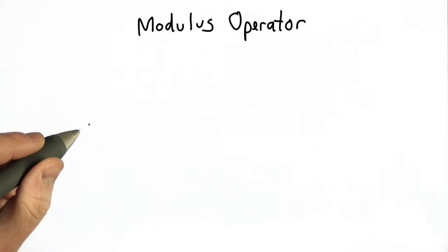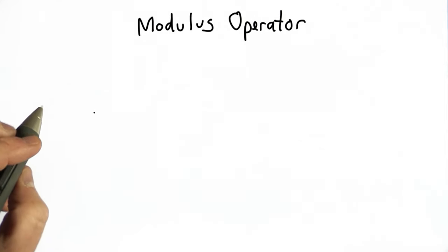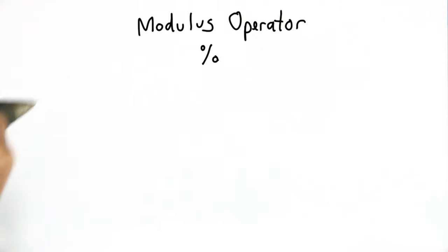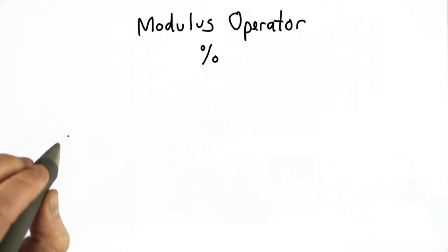So to get our outputs in the correct range, we're going to use the modulus operator, and this is written with a percent sign. It's usually the shift 5 on most keyboards.